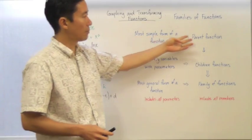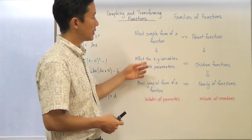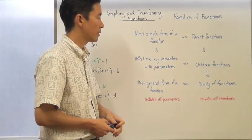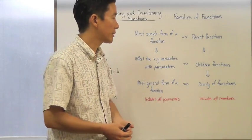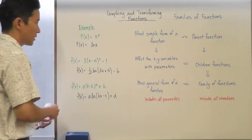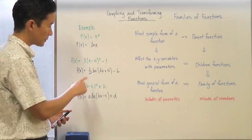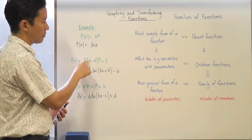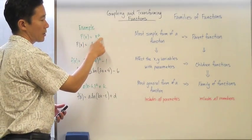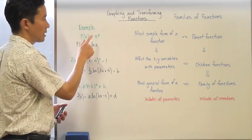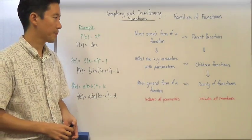Those are the most simple forms of a function — the parent functions. Once we start affecting the x and y variables of the parent function with parameters, we create what I'm going to refer to as children functions. For example, if the parent function is x², then 3(x - 4)² - 1 is still a quadratic function because it is related to the parent, but now parameters are affecting the x and y values.